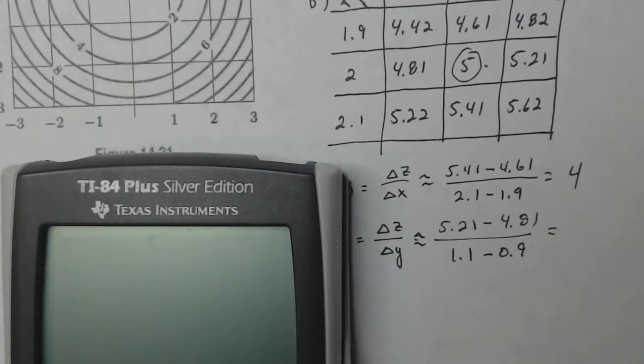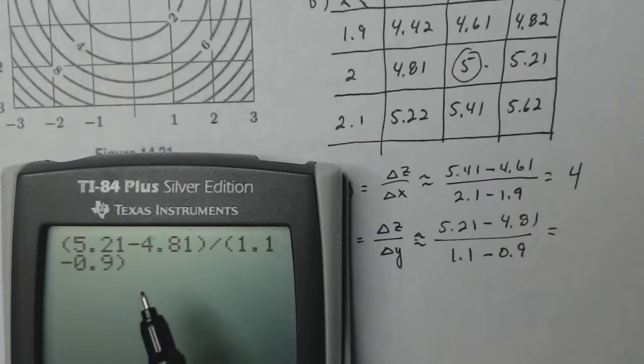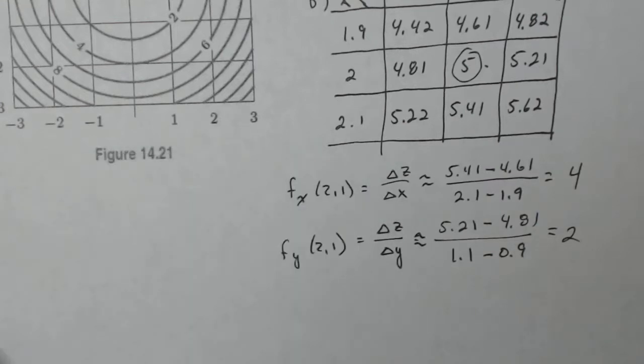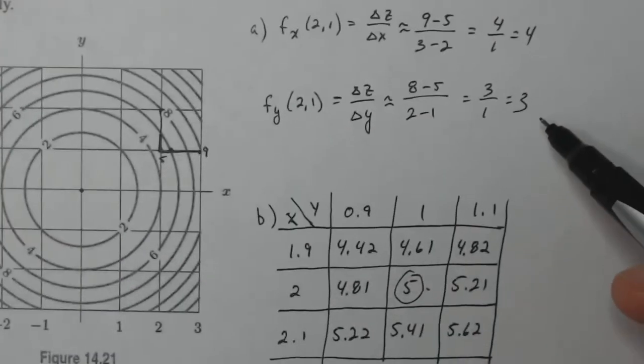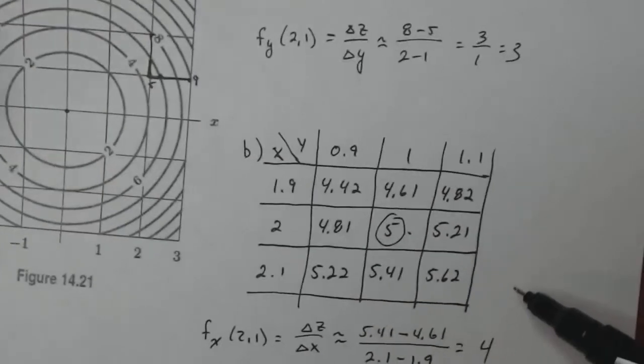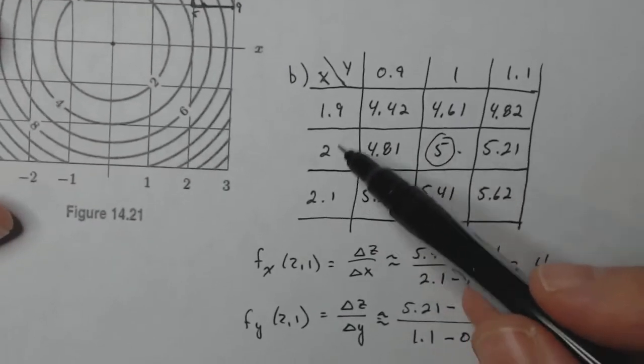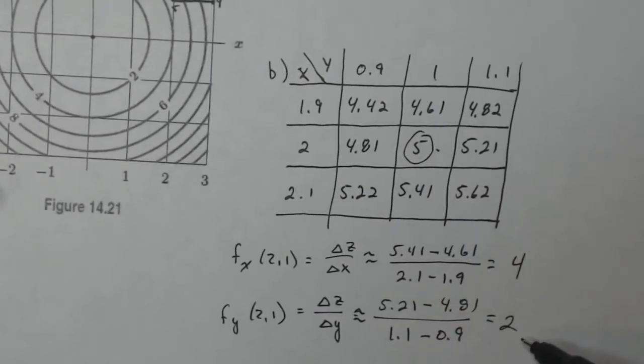See what that gives me with my trusty calculator. All right, so let's see. 5.21 minus 4.81 divided by 1.1 minus 0.9. I'm going to do that right. 5.21, 4.81, 1.1. Okay, and I get two. Now that's not as good of an estimate as I got with the other one. So here I have a two and this one I got three. These numbers are pretty close together here, so I'm guessing this one's going to be more accurate.